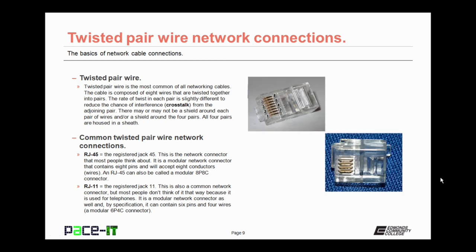Now let's talk about the common twisted pair network connectors. First up is the RJ45 — the Registered Jack 45. This is the network connector that most people think about when they think about Ethernet networking. It's a modular network connector that contains eight pins and accepts eight conductor wires. An RJ45 can also be called a modular 8P8C connector — that's an eight-pin, eight-conductor connector.